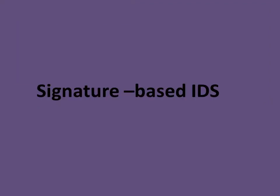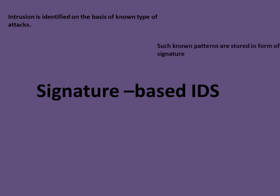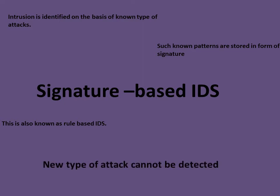There are three types of IDS based on how they function. Signature-based IDS identifies intrusion on the basis of known types of attacks. Such known patterns are stored in the form of signatures. This is also known as rule-based IDS. However, new types of attacks cannot be detected.